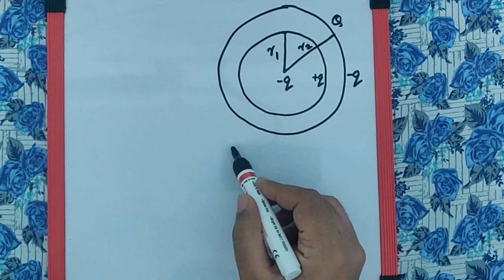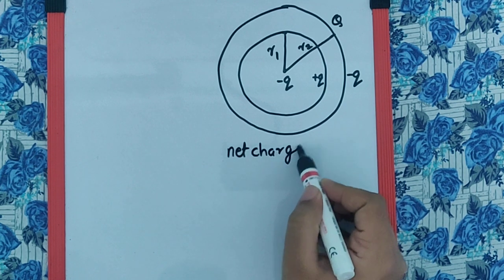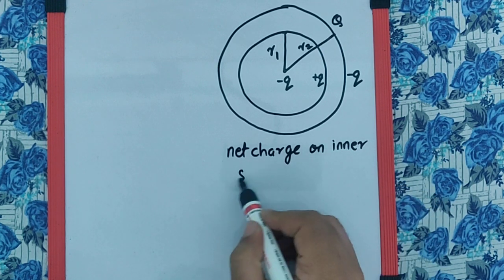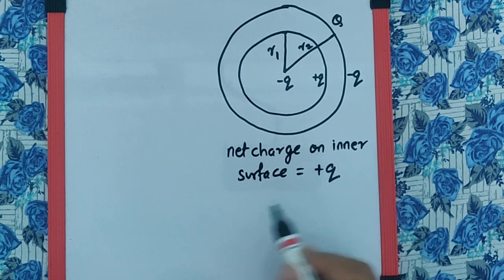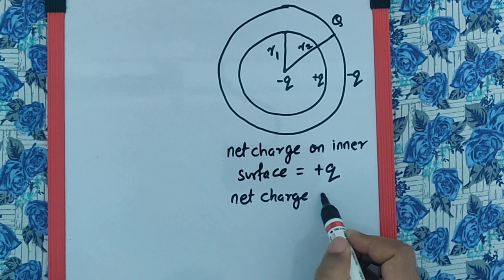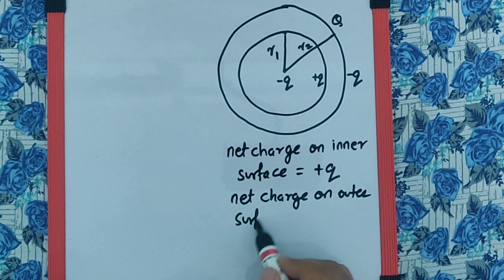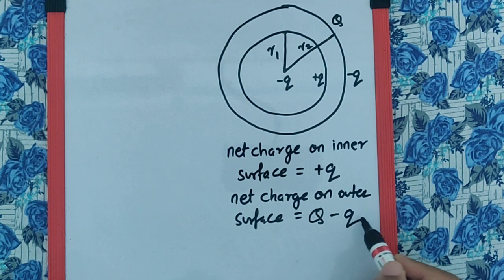Basically, I can say the net charge on inner surface is now plus q, and the net charge on outer surface is going to be capital Q minus q.